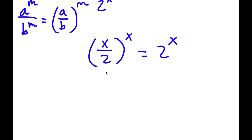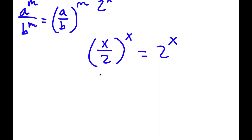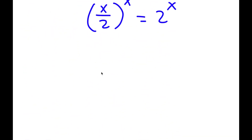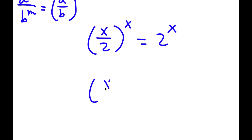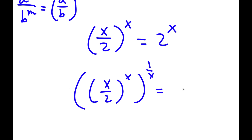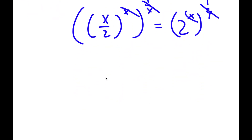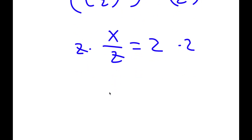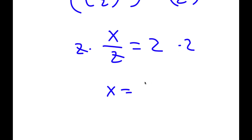Now I'm going to take the power of 1 over x on both sides. So I have x over 2 to the power of x, to the power of 1 over x, is equal to 2 to the power of x to the power of 1 over x. The x and 1 over x cancel out on both sides, so I'm left with x over 2 is equal to 2. To solve this, I simply multiply both sides by 2, and I'll be left with x is equal to 2 times 2, which is 4.